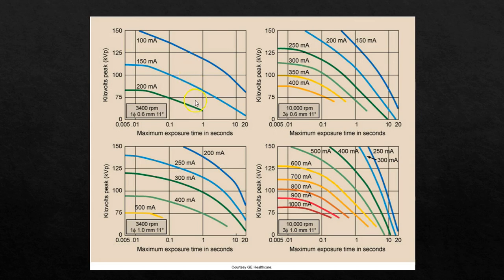So that's kind of how the whole thing works. Looking at this other rating chart, this tube has an anode that can spin at 10,000 RPM, it's got a one millimeter large focal spot, and this is for three-phase. With a three-phase generator, large focal spot, and high-speed anode, at 100 kVp and 300 MA, I can go all the way out to probably about five seconds — a ridiculously long exposure time. That just goes to show how much more power this tube can stand compared to the first one.